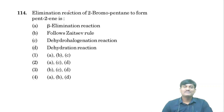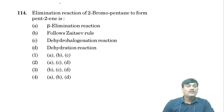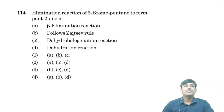Dear students, in the previous video we discussed the first 23 chemistry questions of NEET 2020. In this video we will discuss the remaining 22 questions. The first question is about the elimination reaction of 2-bromopentane to form pent-2-ene. This reaction follows beta elimination, specifically dehydrohalogenation and dehydration reaction.